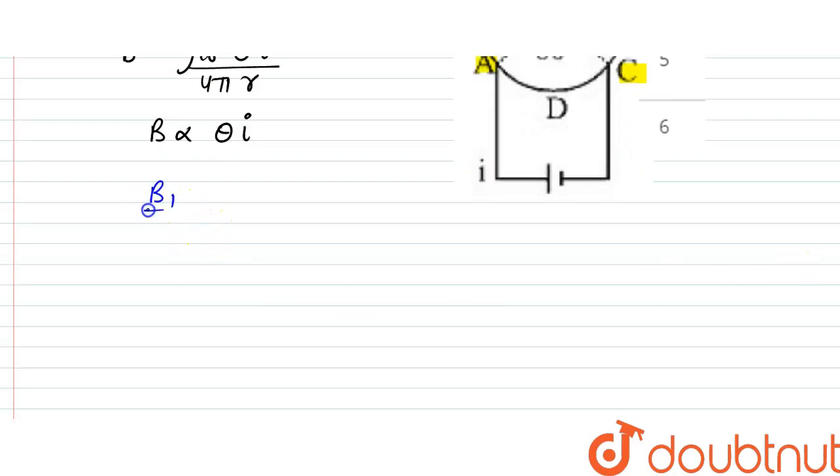B1 by B2 would be equal to theta 1 by theta 2 into i1 by i2. So i1 by i2 can be written as...